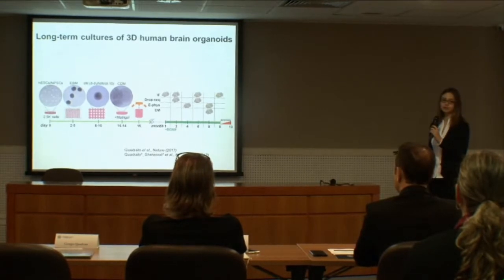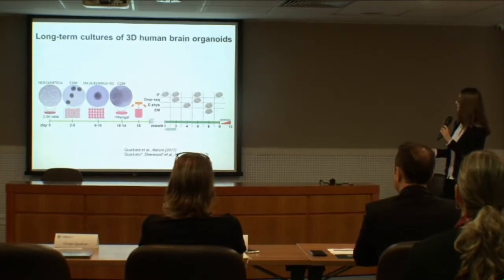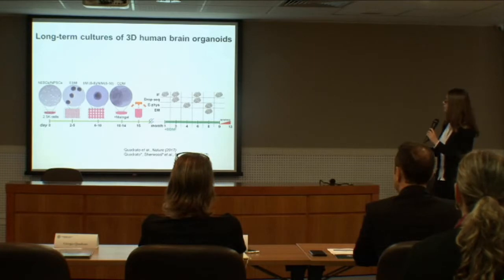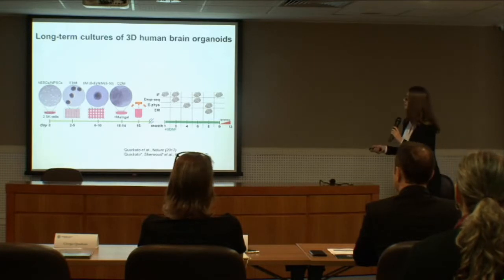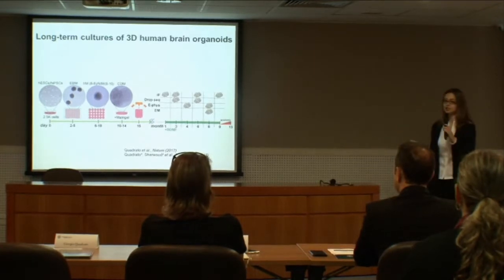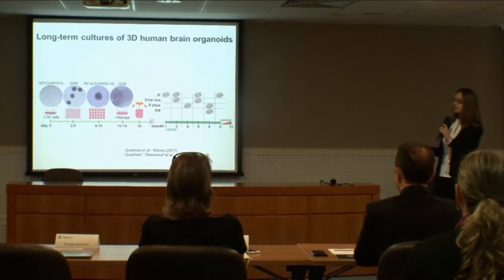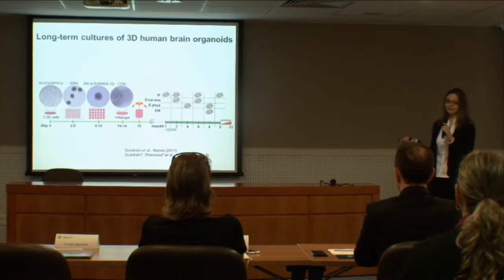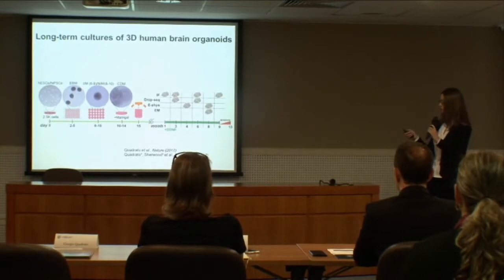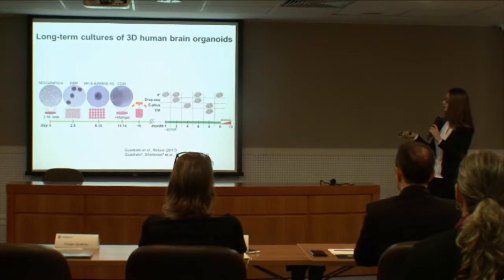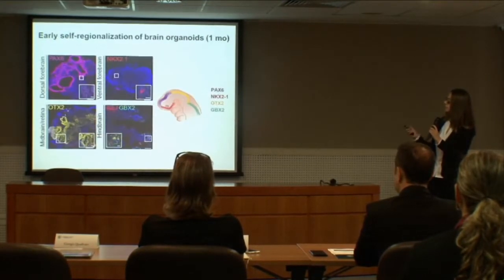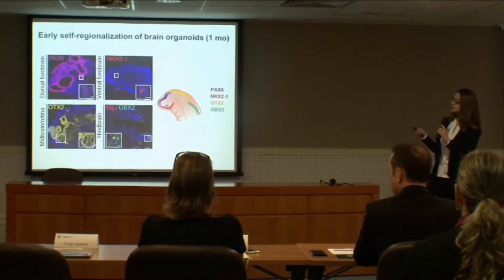After embedding in Matrigel we transfer the organoids to a spinner bioreactor, and they can survive up to nine months in the presence of neurotrophins such as BDNF. These organoids have the potential to generate every cell type of the brain because they are not patterned.